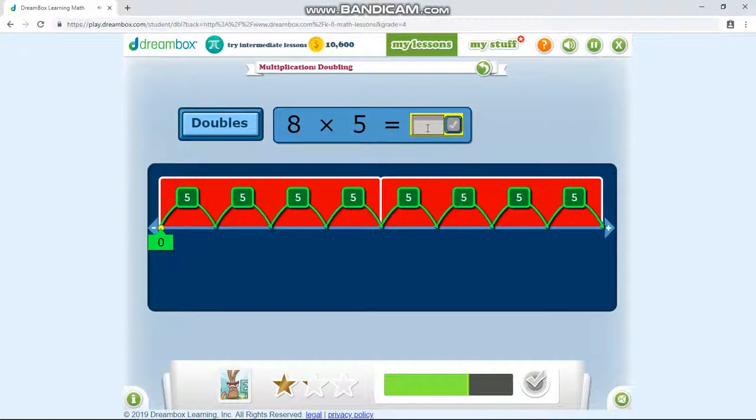Eight times five. If you can't solve this mentally, or if you don't know the multiplication table, you can just add this. For example, five plus five plus five plus five. That is twenty. So you can add twenty plus twenty, which is forty.